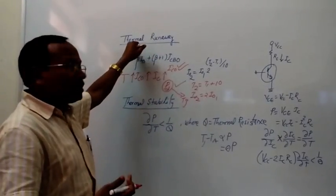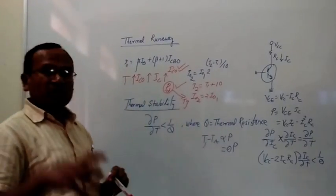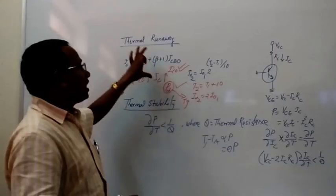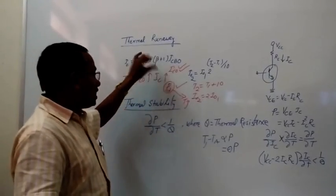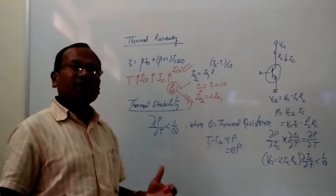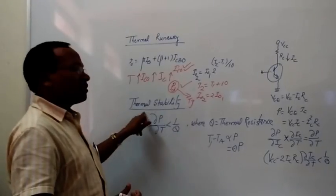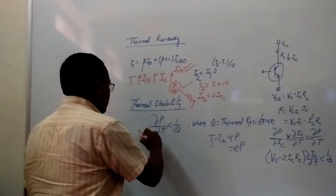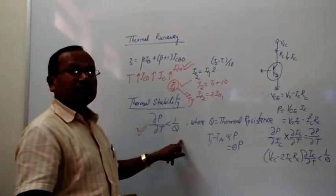For proper biasing and stability of the transistor, collector current should be of a certain limited and proper value, and therefore thermal runaway always needs to be avoided. If we have a certain condition that is satisfied against thermal runaway, that would be called thermal stability. The condition for thermal stability is: ΔP/ΔT < 1/θ.